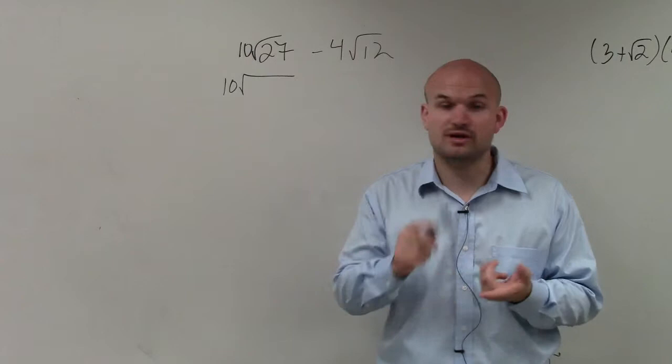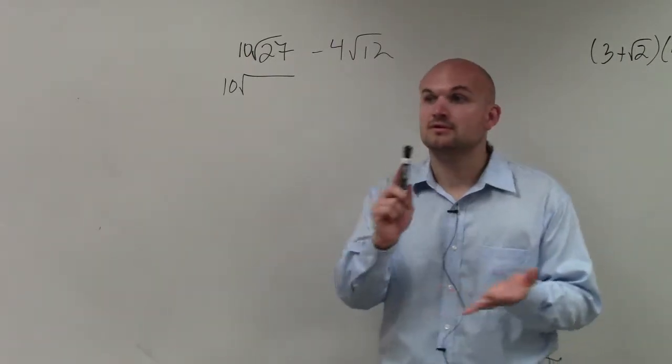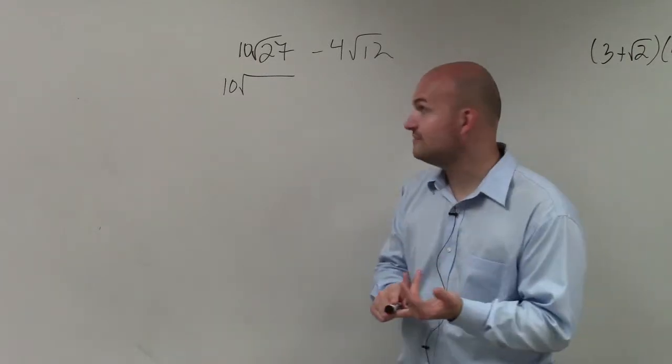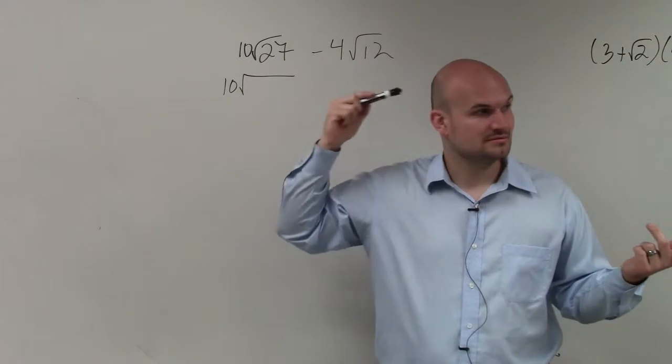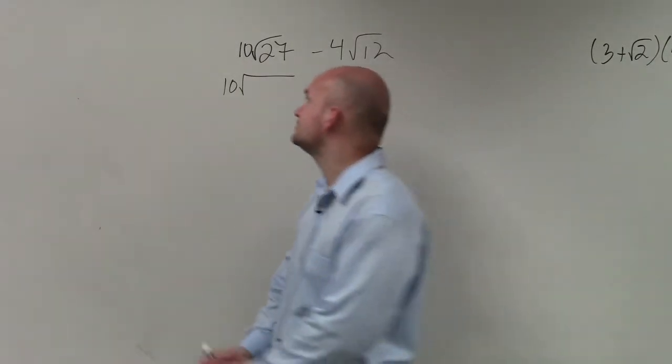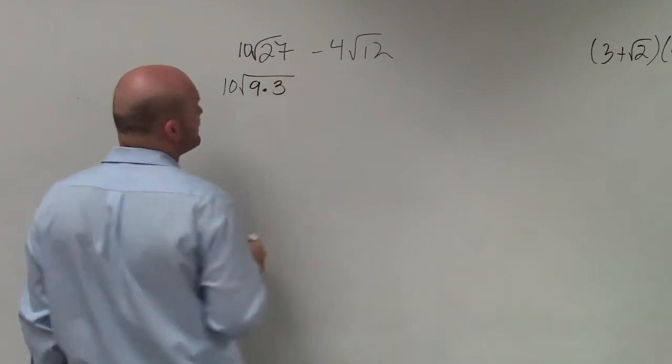Well, let's think of the square numbers: 4, 9, 16, 25. Do any of those divide into 27? 9 does. 9 times 3 is 27.